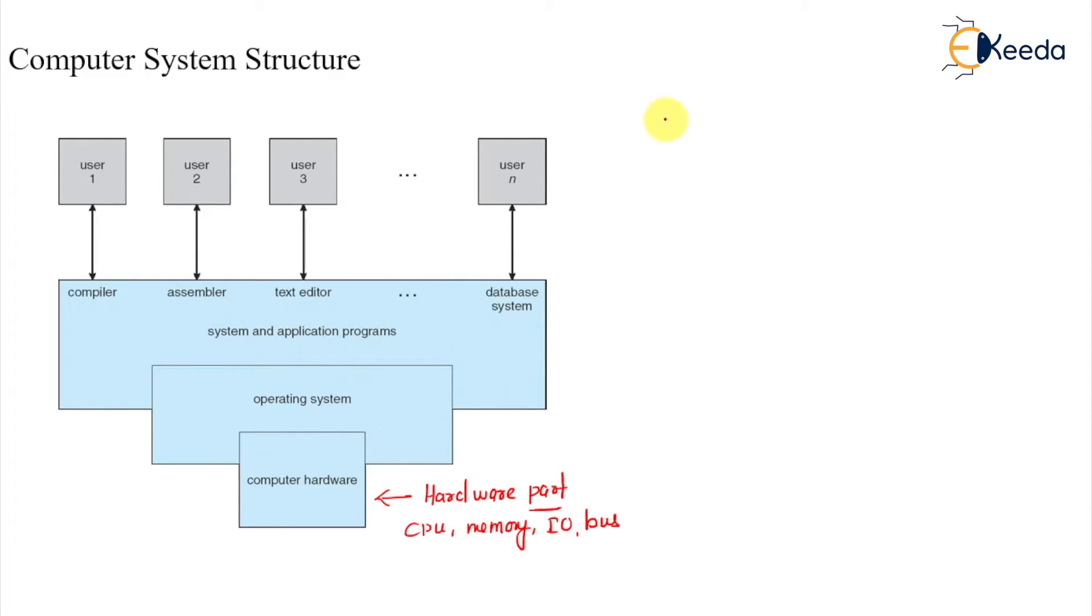A system consists of four different parts. Among here, the top in the hierarchy is the user. User is the one who uses the computer for different purposes. Each user may have a different purpose of using the computer.